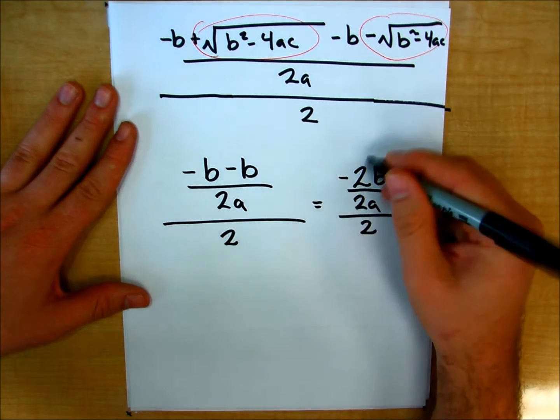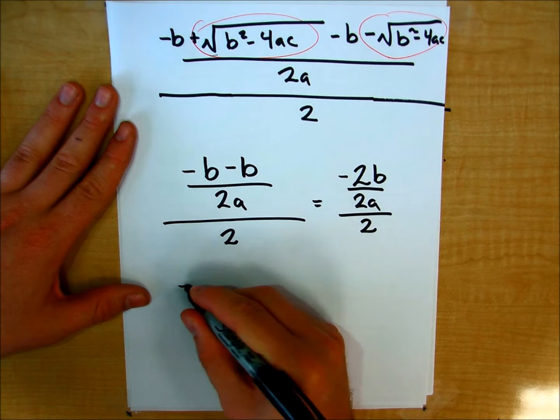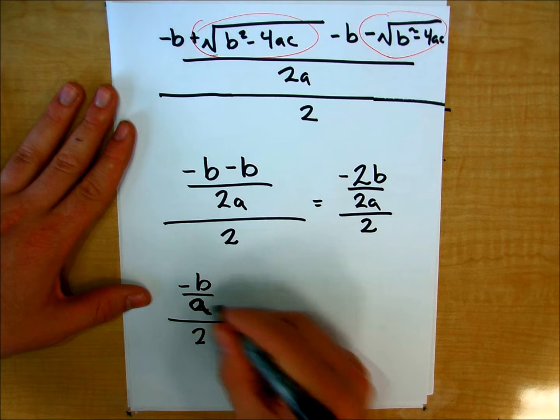I can get rid of these 2s here. And I can say, so negative b over a divided by 2.